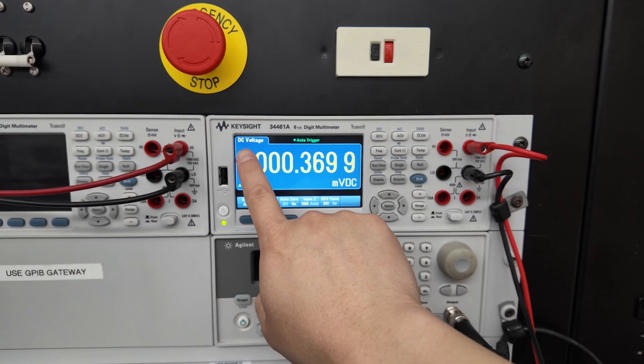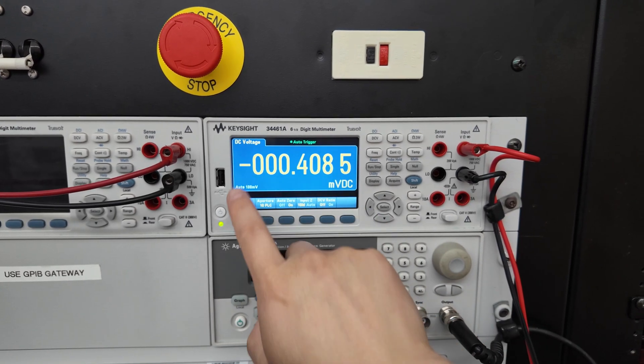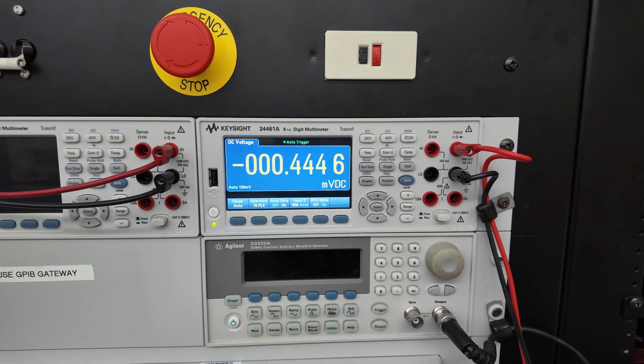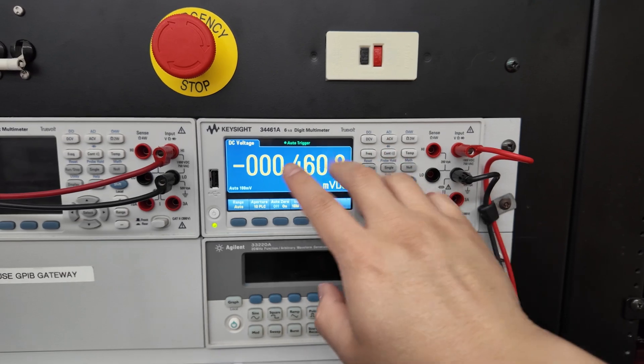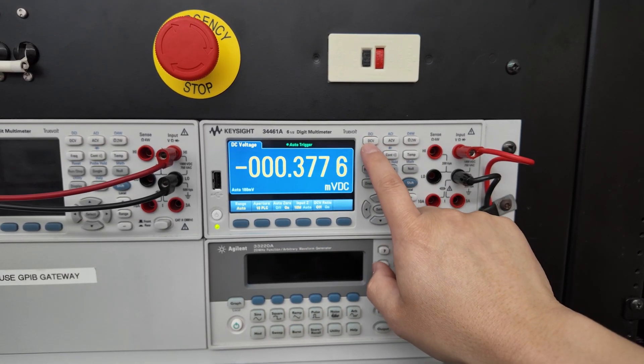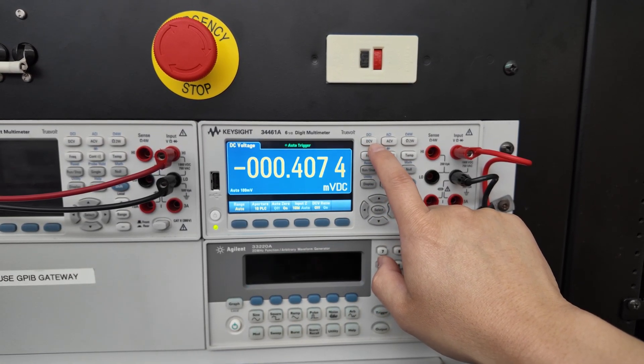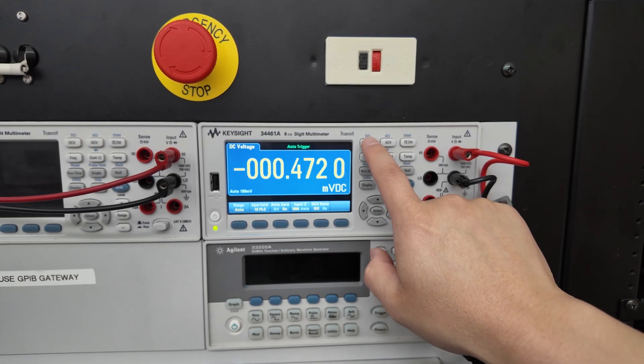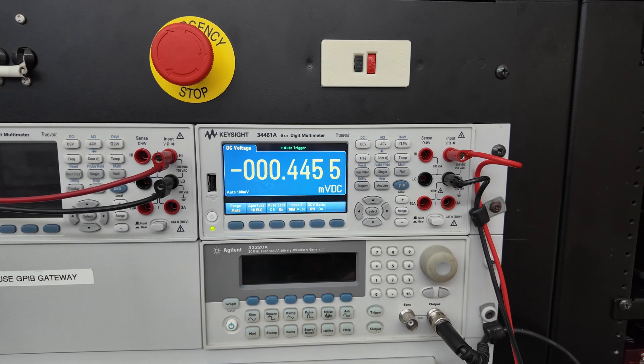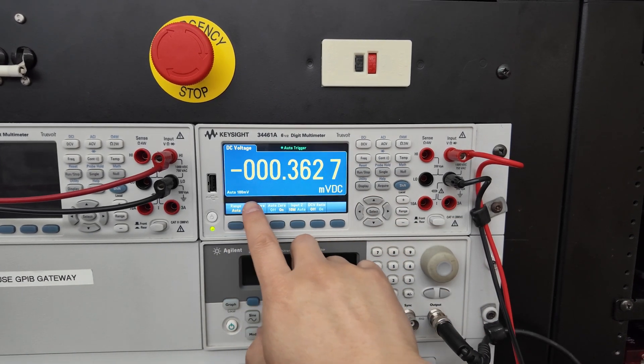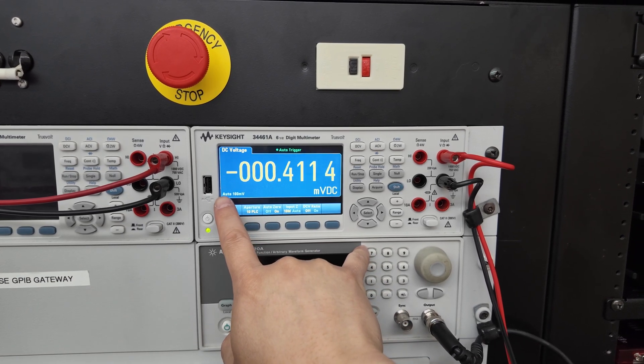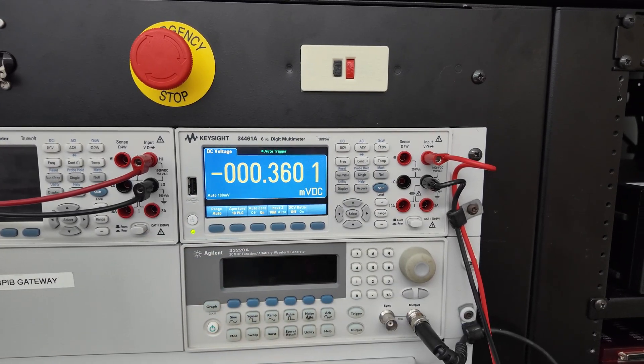Usually the multimeter will start up with DC voltage as the default setting, but just in case this is not the setting that comes up, we can always go to the DC V mode for DC voltage measurement. When we do this, DC voltage measurement will come up in auto range and that is all you have to do to measure voltage.